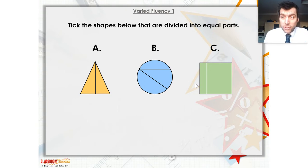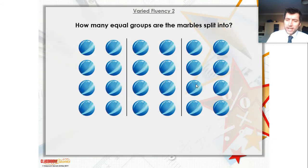Well done, guys. A is the only one that's correct there. That triangle has been split into two equal-sized smaller triangles. But the circle and the square have not been split into equal-sized shapes.